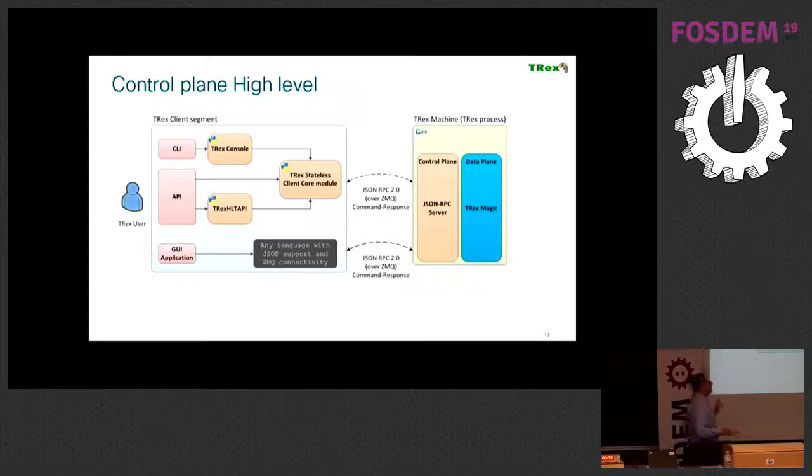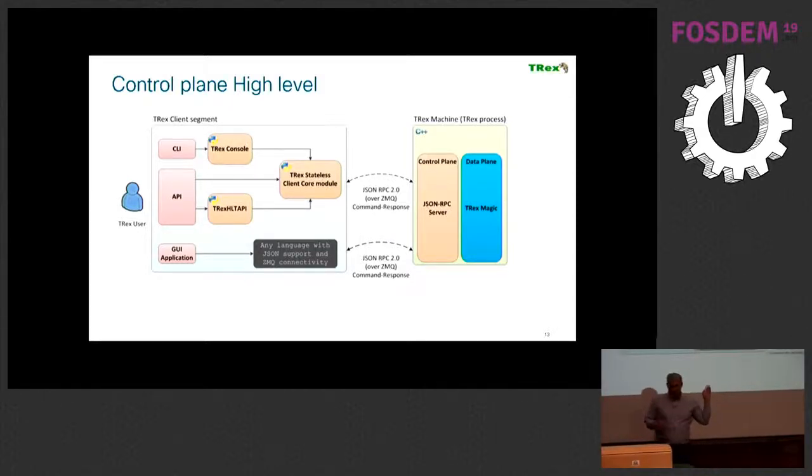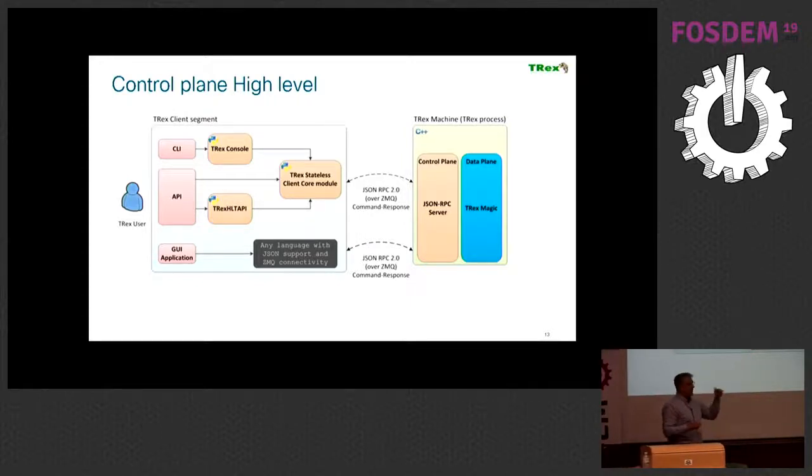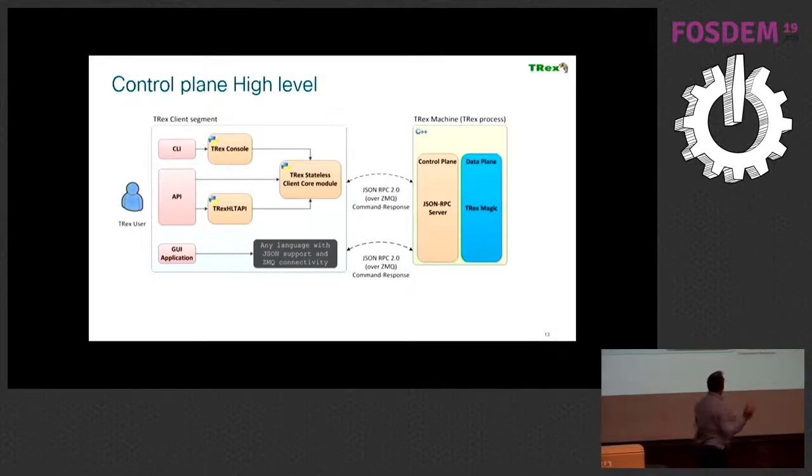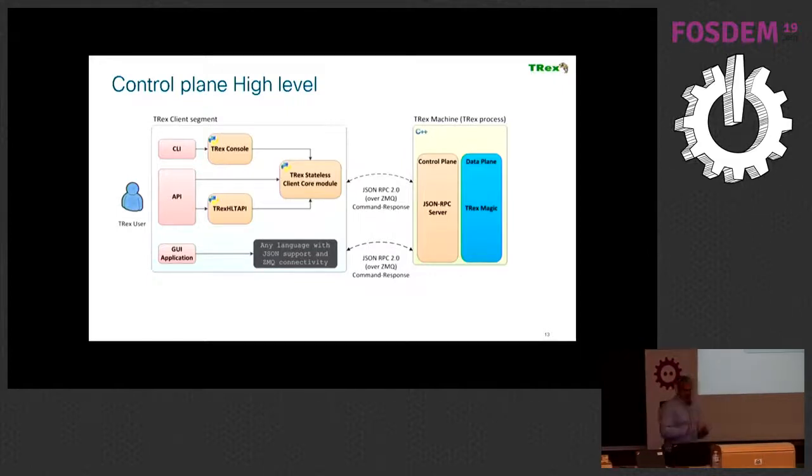This is the architecture, the high-level architecture. There is a server, there is RPC using JSON RPC. There is a data path that I'll talk about later that is scalable with the number of cores. If you add more cores, you will get linear scale with the performance, which is really high. Then comes the Python that encapsulates all the JSON RPC into a nice API. There is a Java API, Ericsson is supporting that. There is a GUI, a console, and the API. We're just wrapping everything for the users.